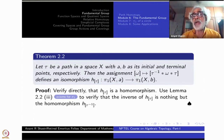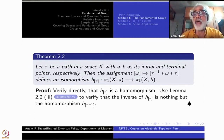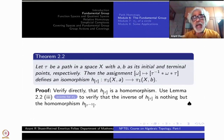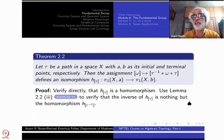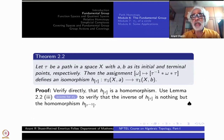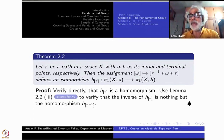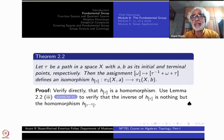Suppose you have two points a and b as initial and terminal points for a path τ. Take a loop ω at a. Pre- and post-composing with τ and τ⁻¹: τ⁻¹ starts from b and comes to a, then you trace ω (you are at a), then you go back by τ to b. So you start at b and end at b — you get a loop at b. The class of ω maps to the class of τ⁻¹ ∗ ω ∗ τ.